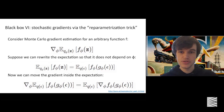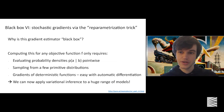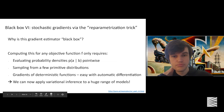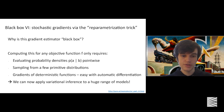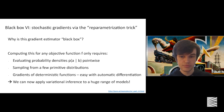This talk is about black box variational inference. This gradient estimator is called the reparameterization trick in the literature. It is 'black box' because computing it for any objective function f only requires evaluating probability densities point-wise, sampling from a few primitive distributions, and computing gradients of deterministic functions — which is now very easy in practice thanks to high-quality automatic differentiation software. That means we can now apply simple inference to a huge range of, even quite high-dimensional Bayesian models, including models that combine classic Bayesian techniques and deep learning.